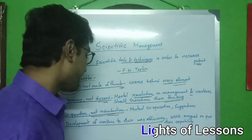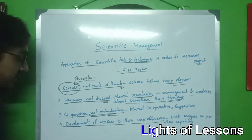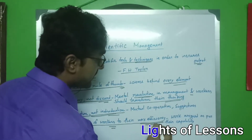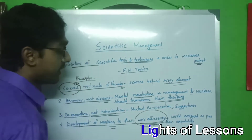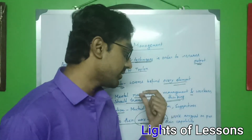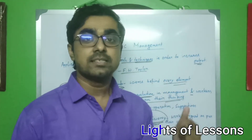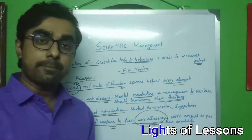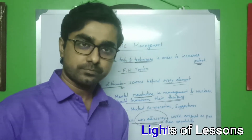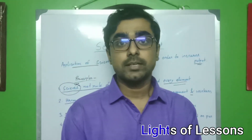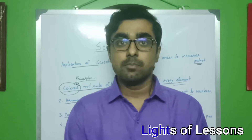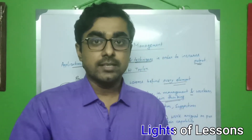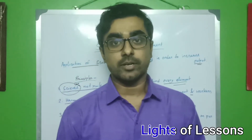So that is the third principle. The last but not least, the fourth principle is development of workers to their maximum efficiency. This is the ultimate and most important principle of scientific management theory — development of workers to their maximum efficiency. Development of workers means that employees are developed by management.